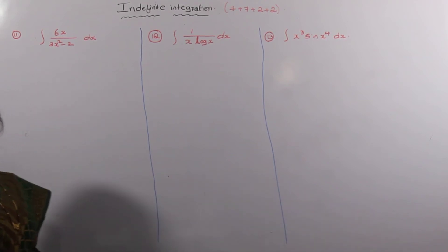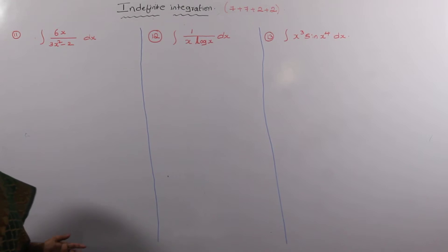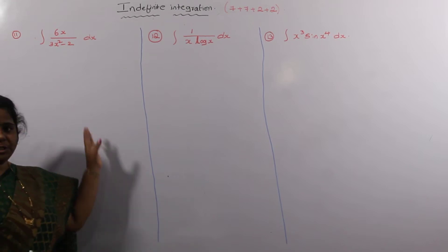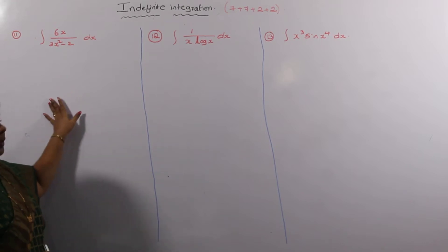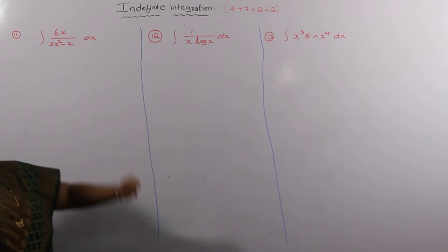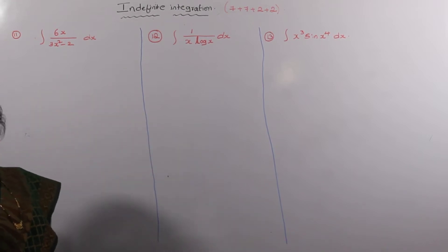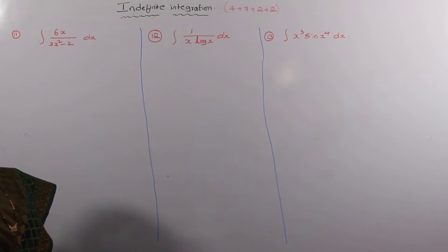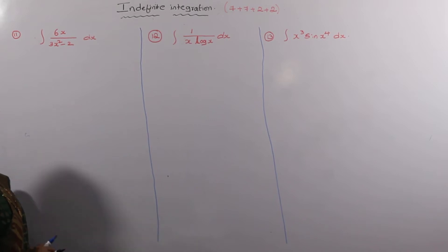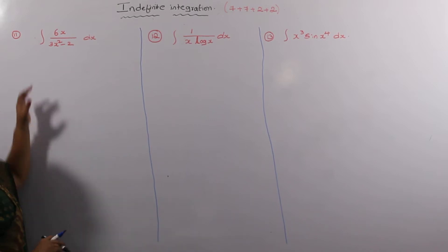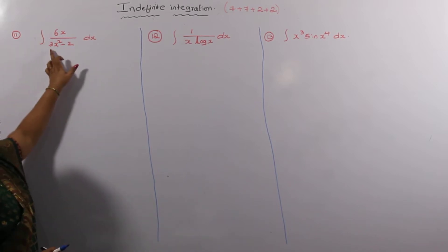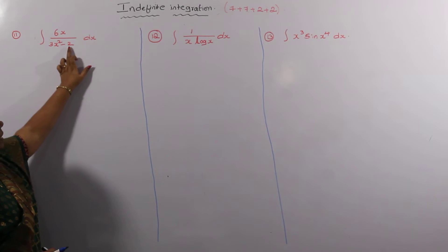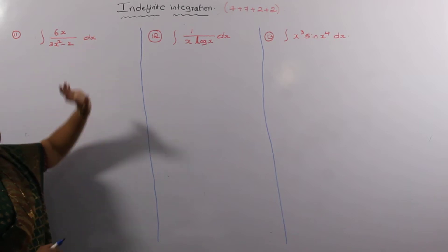VSAQs — next VSAQ. Based on this integration by substitution model, we have some very important VSAQs. Integral of 6x divided by (3x² - 2) dx.